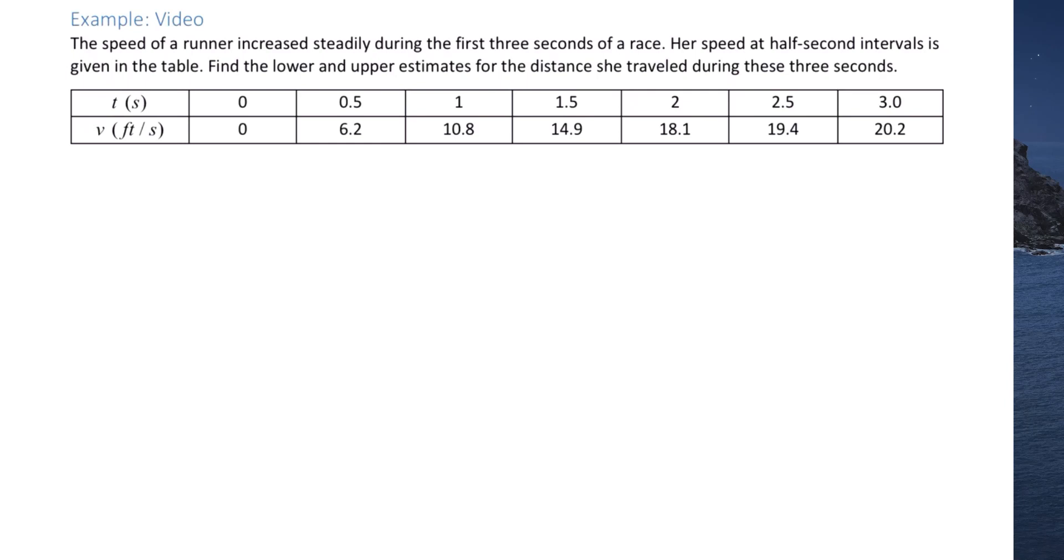The speed of a runner increased steadily during the first three seconds of a race. Her speed at half-second intervals is given in the table. Find the lower and upper estimates for the distance she traveled during these three seconds.